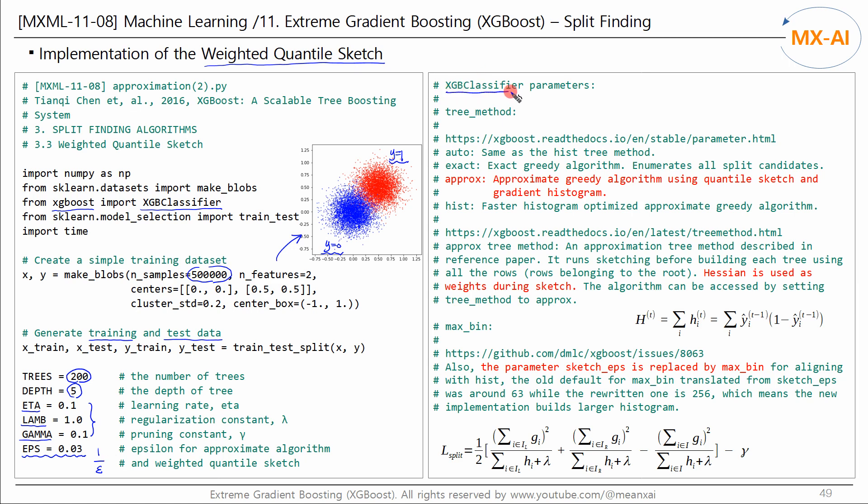Let's look at the XGB classifier parameters related to the weighted quantile sketch. There are three types of the tree_method parameter: exact, approx, and hist. The first represents the exact greedy algorithm. And the second represents the approximate algorithm. The third is about the histogram-based algorithm. We will take a closer look at this later in the LightGBM video. According to this document, setting the tree_method to approx will cause Hessian to be used as weights while sketching. That is, we use H of this equation below as the weights. So, if we set the tree_method to approx, it will work as the weighted quantile sketch algorithm.